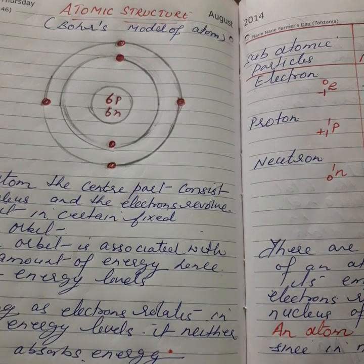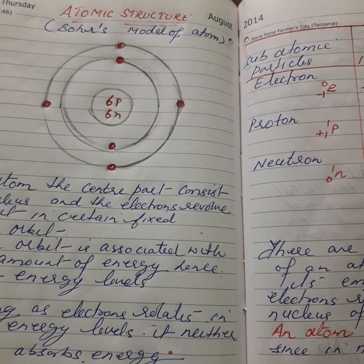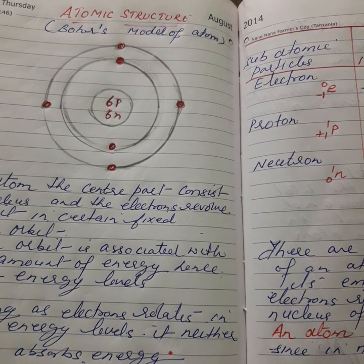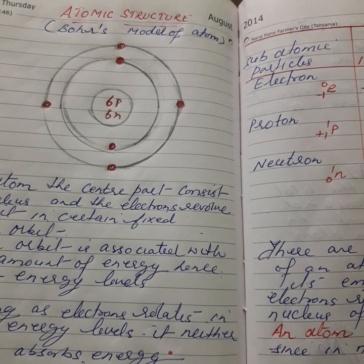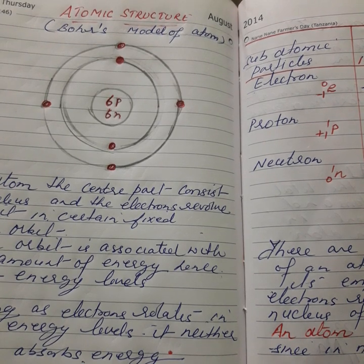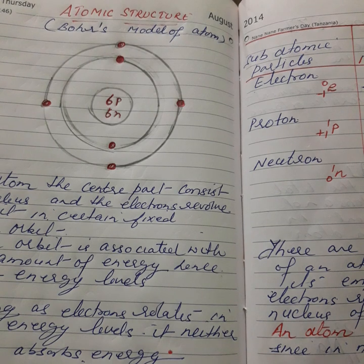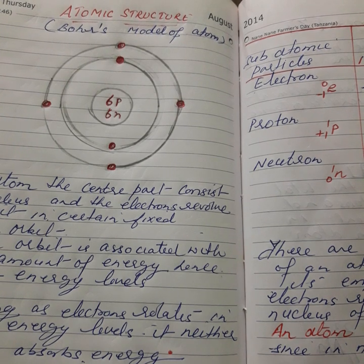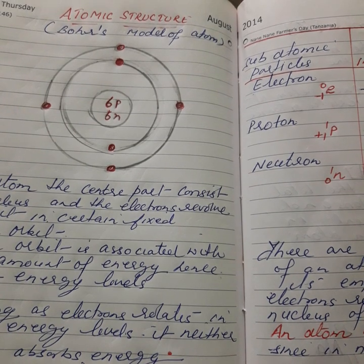Then Bohr explained the causes of the stability of the atom. He modified Rutherford's atomic model and gave his own atomic model. He said that electrons revolve around the nucleus in fixed orbits, and each orbit is associated with a certain amount of energy, hence named as energy level. These levels are also designated as K, L, M, N, etc.